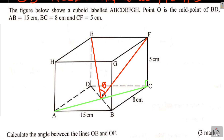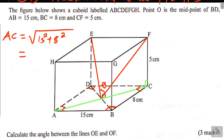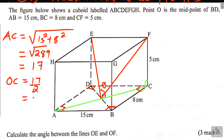This is a cuboid, so all the base angles are 90 degrees — all the corners are 90 degrees. Using triangle ABC, we can get AC using Pythagoras' theorem. AC will be given by the square root of 15 squared plus 8 squared, which is √(225 + 64) = √289 = 17. So AC is 17.